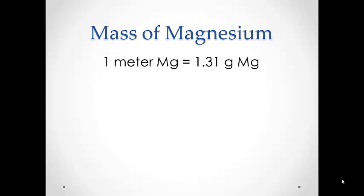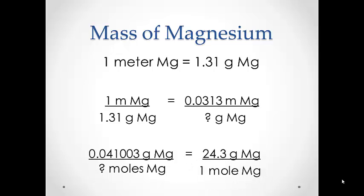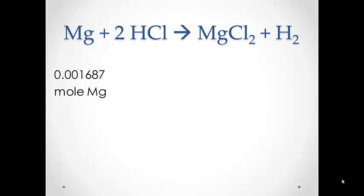Now that we know the volume of our hydrogen gas at standard temperature and pressure, we need to find out how many moles that volume contains. We go back to the amount of magnesium used in our reaction. We found the mass of a 1-meter length of magnesium ribbon to be 1.31 grams. Any two measurements set equal to each other can be set up as a direct proportion. Our sample of magnesium ribbon measured 3.13 centimeters, which is 0.0313 meters. Solving this proportion, we find a mass of 0.041003 grams of magnesium. Using the molar mass of magnesium, we can determine how many moles that represents. Since hydrogen forms in a one-to-one ratio with magnesium, that also tells us the number of moles of hydrogen that was produced.